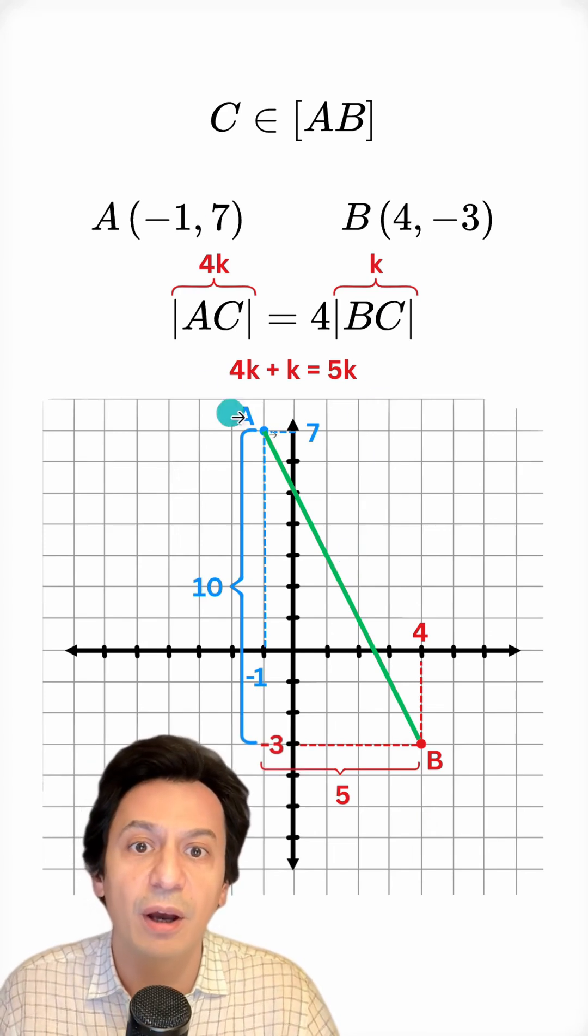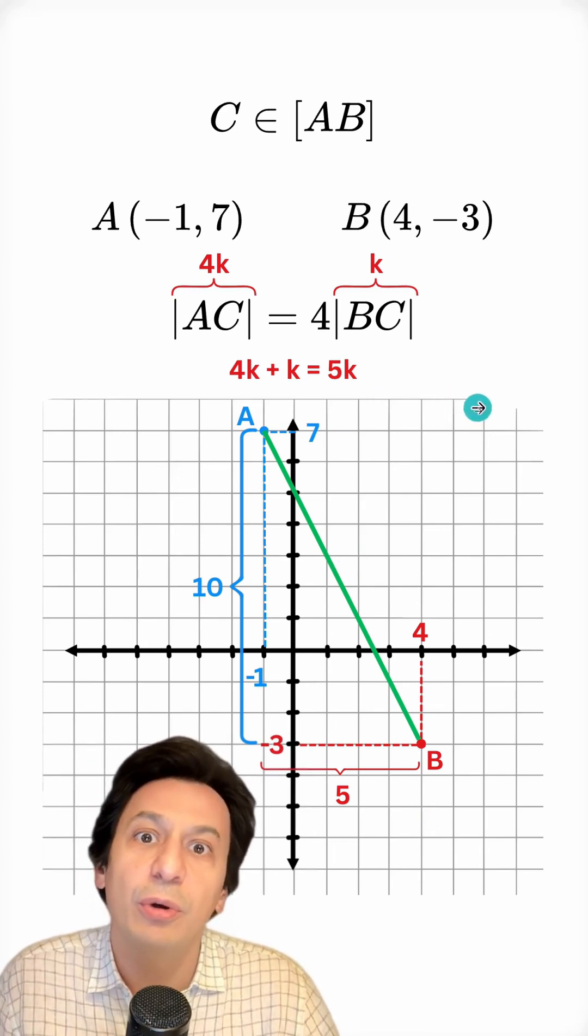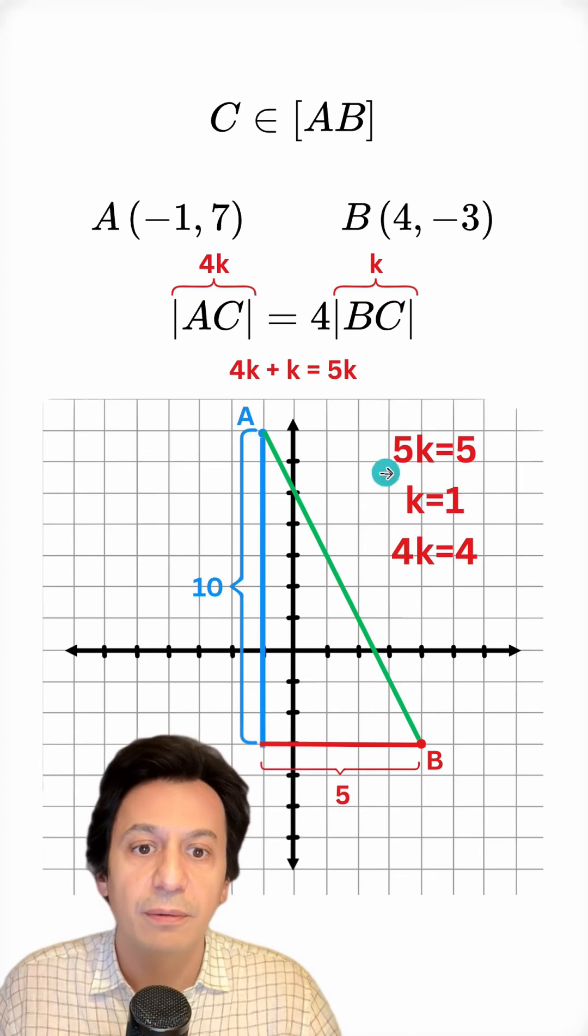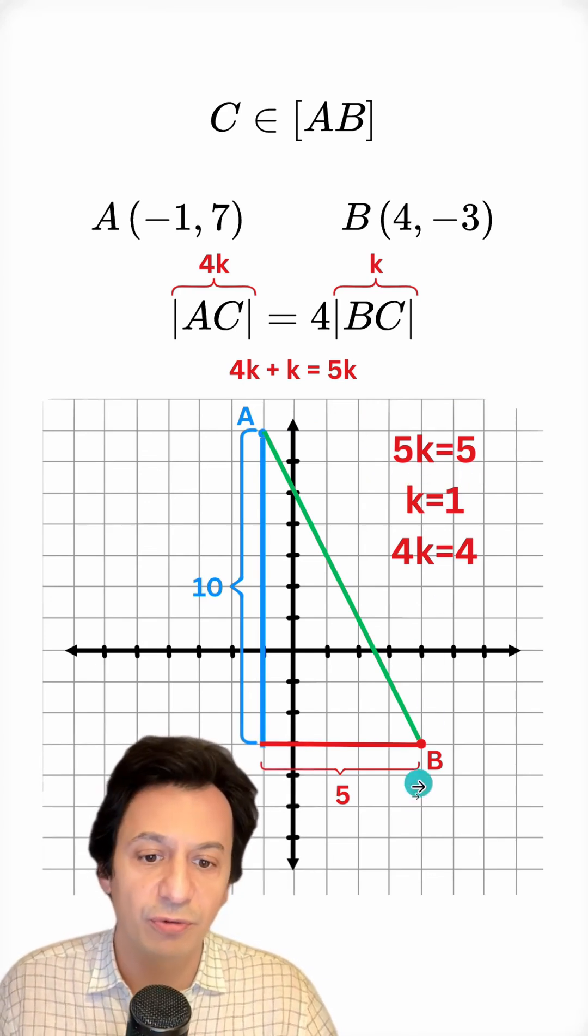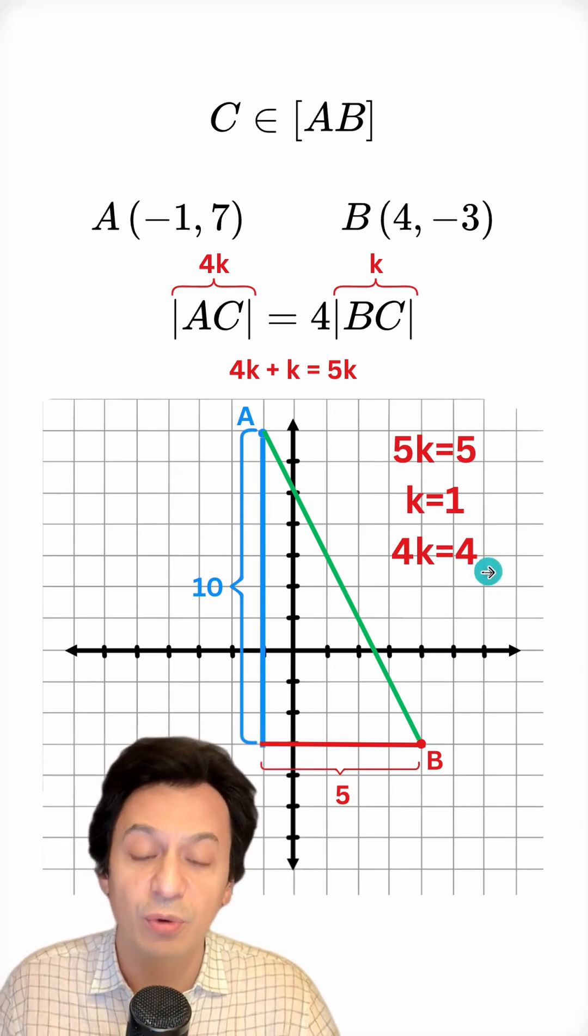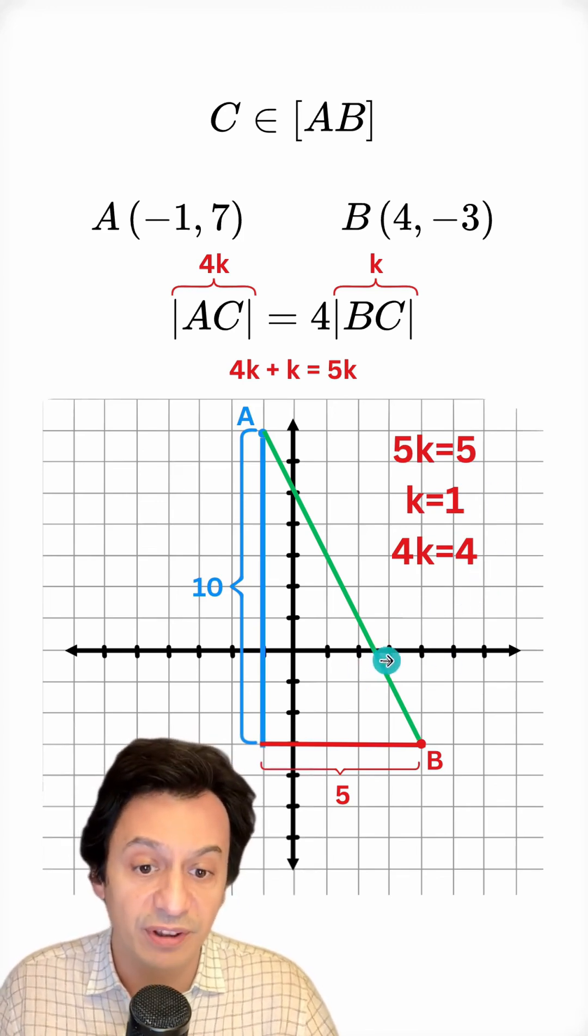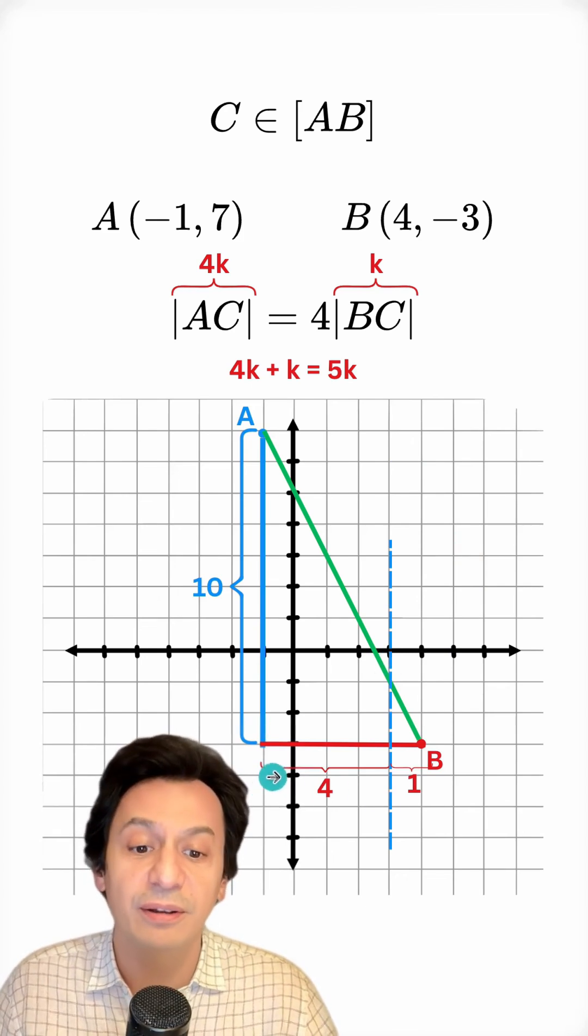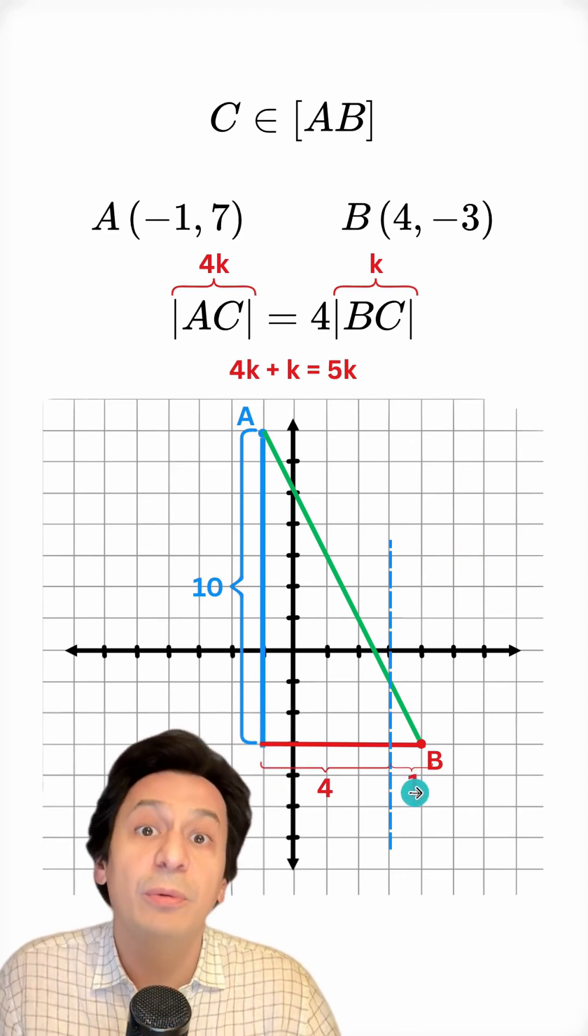Now I'm starting to break these down according to the given ratios to determine the location of the point. First, I set 5K equal to 5, which is here. Then I find the length of K and the length of 4K, 1 and 4. So what I'm saying is that the point here is at such a position that it divides the horizontal segment into 4 and 1.